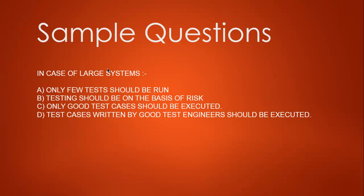Final question: in case of large systems, which option applies? Option A: only a few tests should be run. Option B: testing should be on the basis of risk. Option C: only good test cases should be executed. Option D: test cases returned by good test engineers should be executed. Option A is eliminated because a large system requires checking whether each area gets tested.